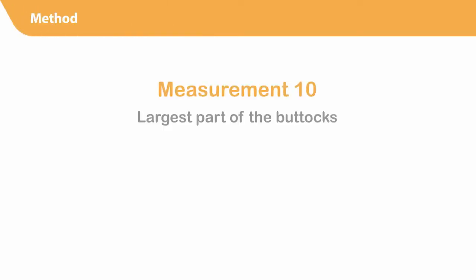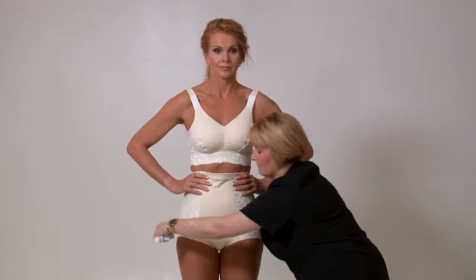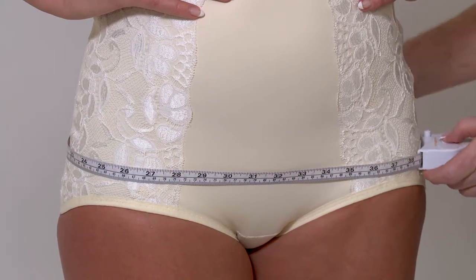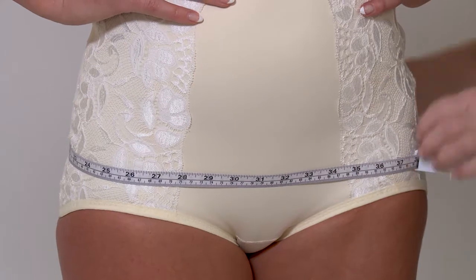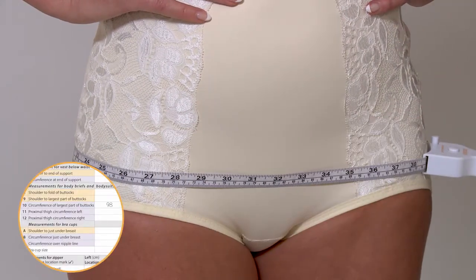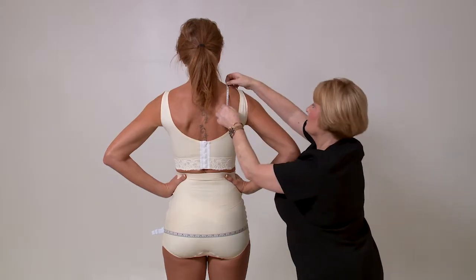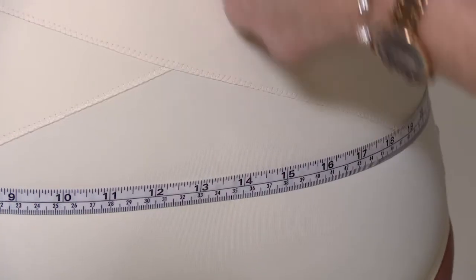Move the circumference tape down to take measurement number ten: circumference of the largest part of the buttocks. Linear measurement number nine: shoulder to largest part of the buttocks is taken from the top of center shoulder down to the bottom of the circumference tape, as demonstrated.